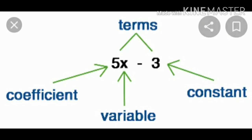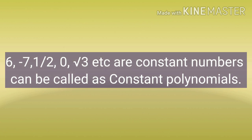Now we study about terms. There are two terms: 5x and minus 3. 5x is the term; 5 is the coefficient, x is the variable. The second term, minus 3, is the constant — numbers are always known as constants. Examples of constant polynomials include 6, minus 7, 1/2, 0, root 3, etc.